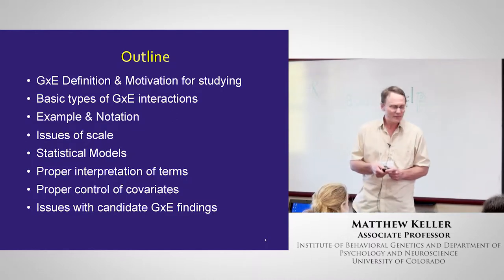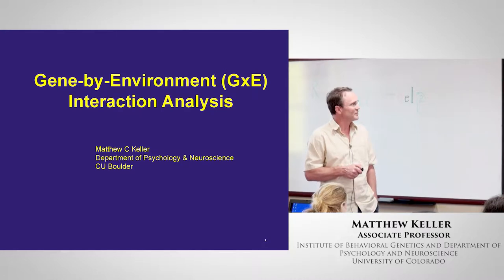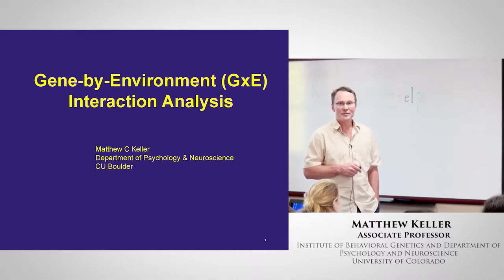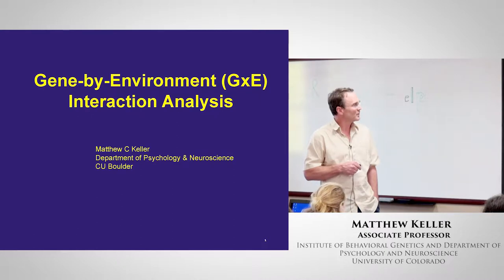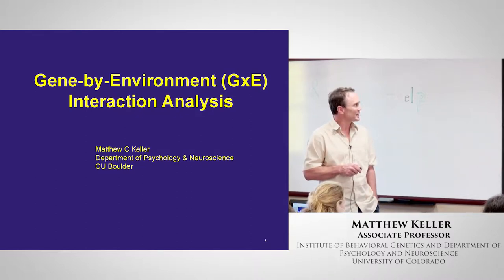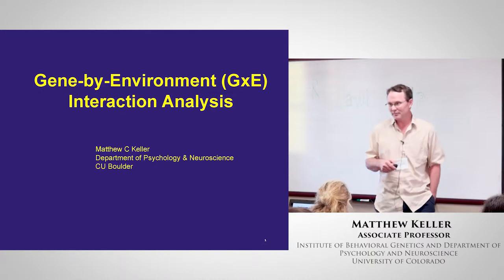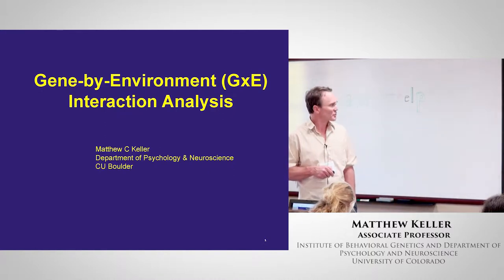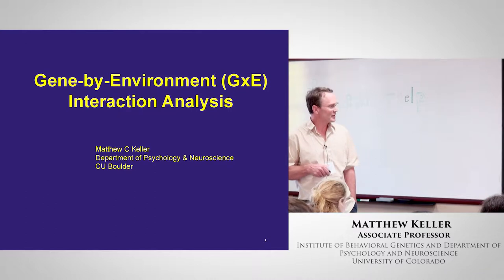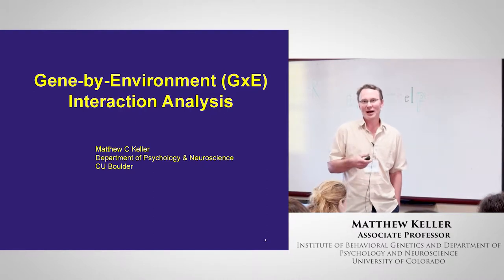Just a quick outline: I'll talk about the definition of G×E and the motivation for studying them. Two basic types of G×E — interactions on the additive scale versus on the multiplicative scale. Some examples of notation and issues of scale, and how interactions can be dependent on the scale upon which Y is measured. Then statistical models discussing what those different terms mean. Then how to properly control for covariates, which is almost never done correctly in this field. And finally, issues with candidate gene-by-environment findings, and how I think they should be done.